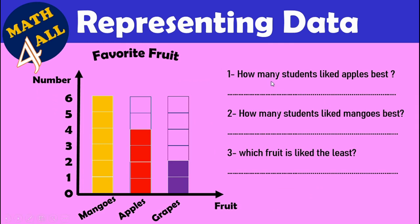Now let's answer some questions from this graph. How many students like apples best? Look at the graph — 4 students like apples. The next question: how many students like mangoes best? From the graph, 6 students prefer mangoes.